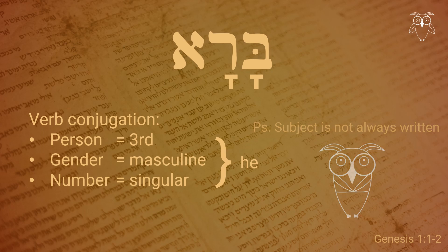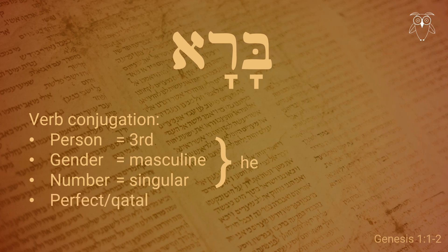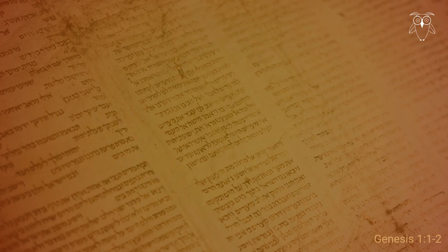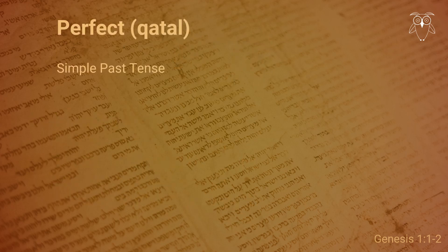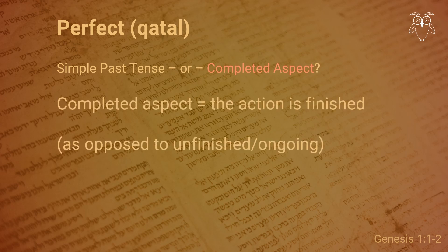Lastly, we see that this verb is a perfect, also known as katal. This is a pretty common verb form and is often translated as a simple past. However, let us look a little closer at the perfect, for though it is commonly translated as a simple past, there are differing opinions about the precise meaning or value of the Hebrew perfect. The main use of the perfect is often seen as describing a completed aspect, rather than past tense.